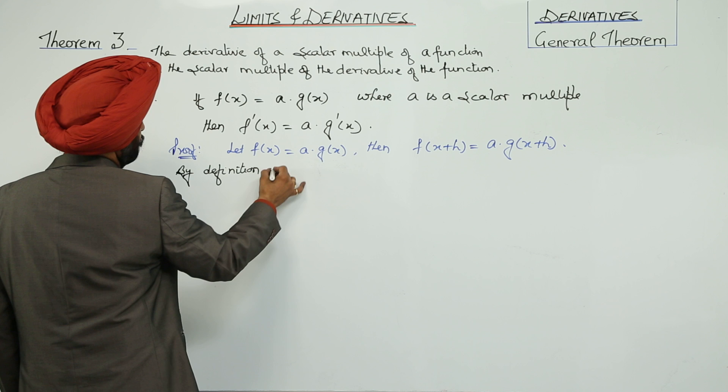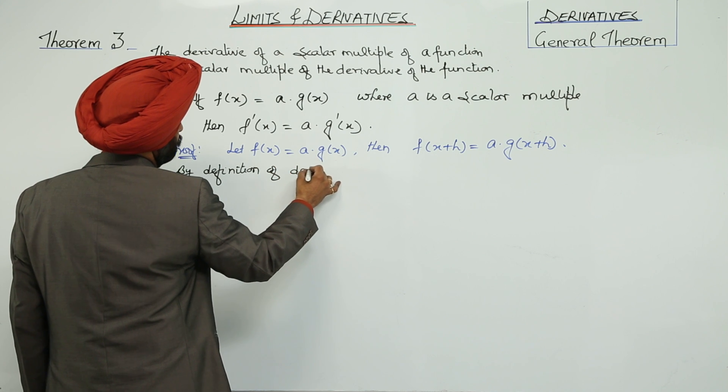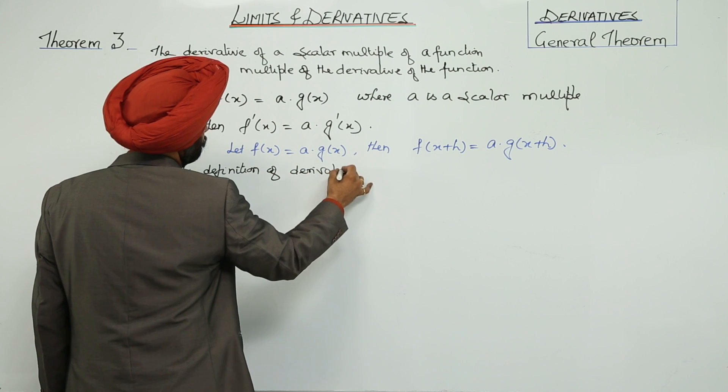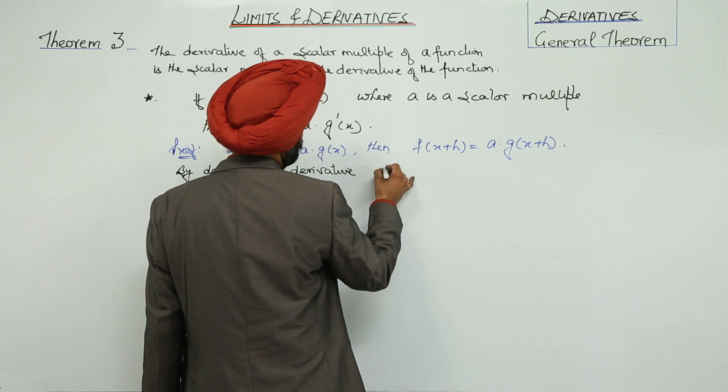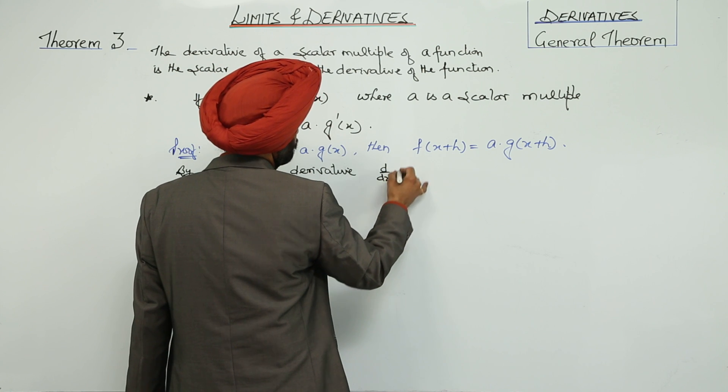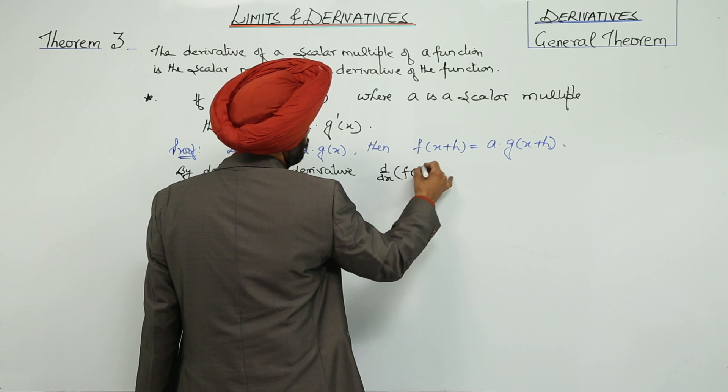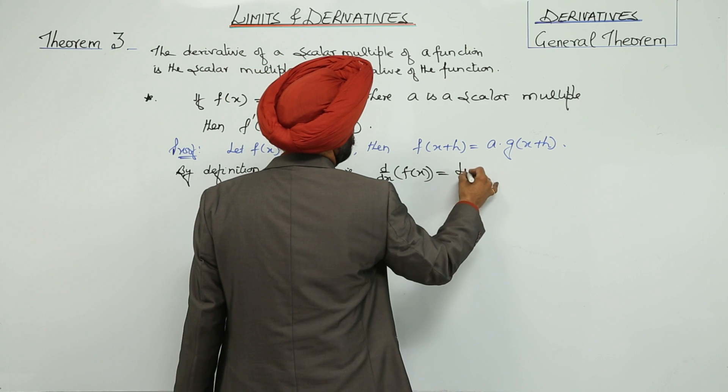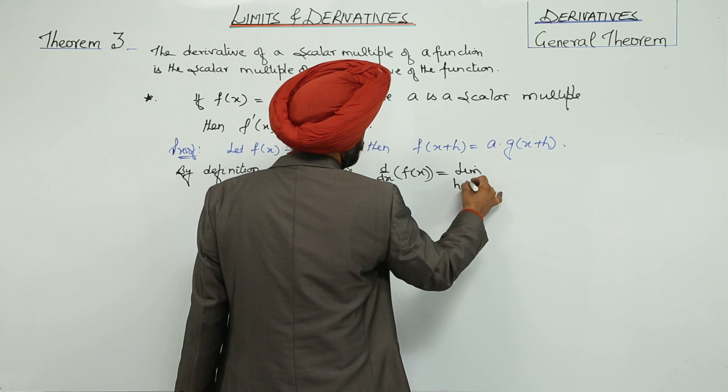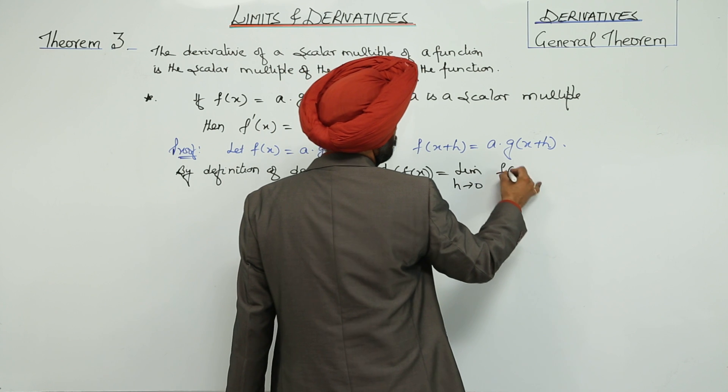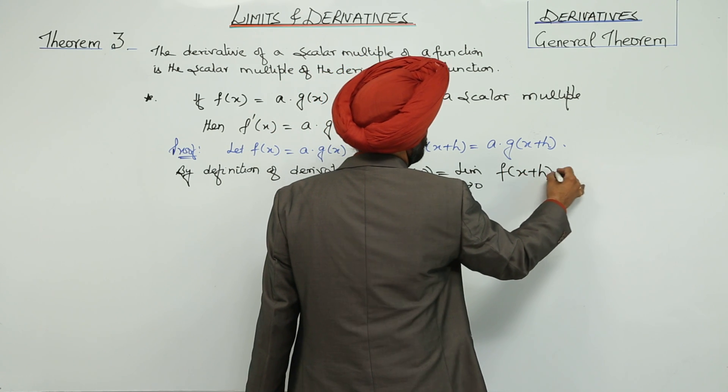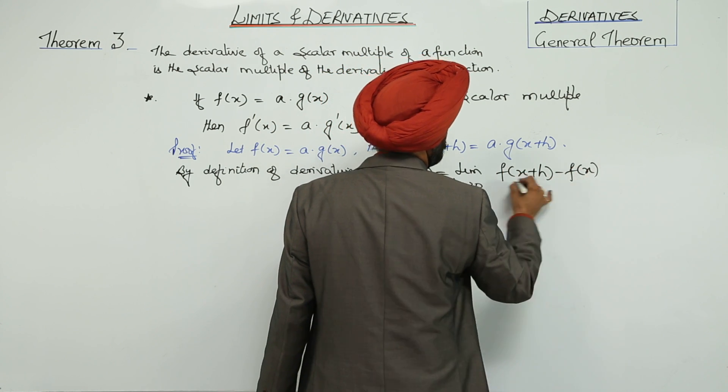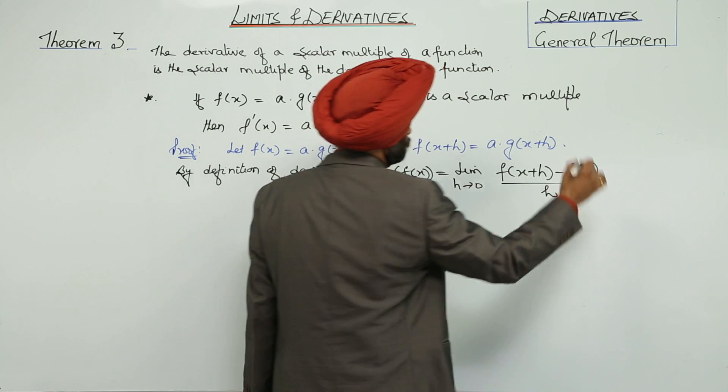By definition of derivative, d/dx of f(x) equals the limit as h approaches 0 of [f(x+h) - f(x)] over h.